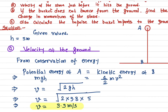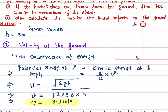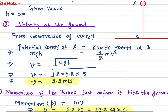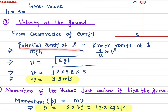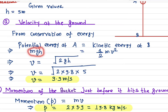Using conservation of energy, the total energy at point A must equal the total energy at point B. The energy at A is entirely gravitational potential energy, and the energy at B is entirely kinetic energy. Therefore, potential energy at A equals kinetic energy at B: mgh = ½mv².